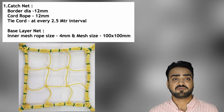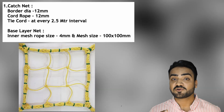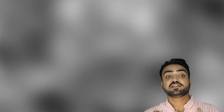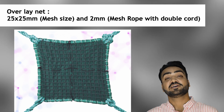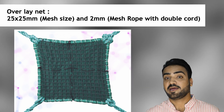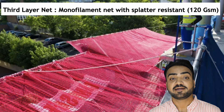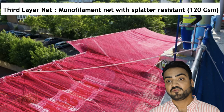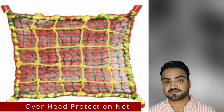For the safety catch net: border diameter must be 12 mm, quad rope must be 12 mm, tie cord at every 2.5 meter interval. The base layer net has inner mesh rope size of 4 mm with mesh size 100 by 100 mm. The overlay net has 25 by 25 mm mesh size with 2 mm mesh rope with double cord, provided with UV-stabilized containment net. The third layer is a monofilament UV-stabilized net with splatter resistance of 120 GSM.